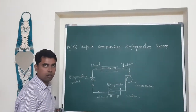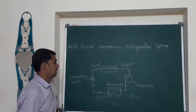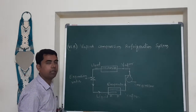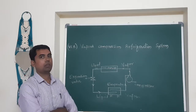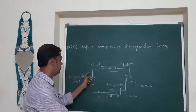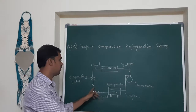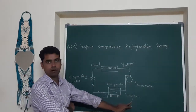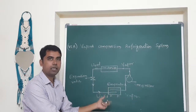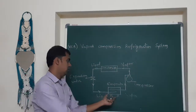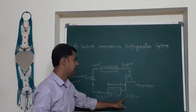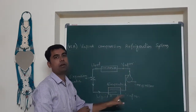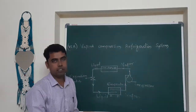As the refrigerant enters the evaporator, it will be a low pressure liquid after passing through the expansion valve, where its pressure is reduced. Inside the evaporator, which is located within the space to be cooled, the refrigerant evaporates and forms vapor, absorbing latent heat of vaporization.